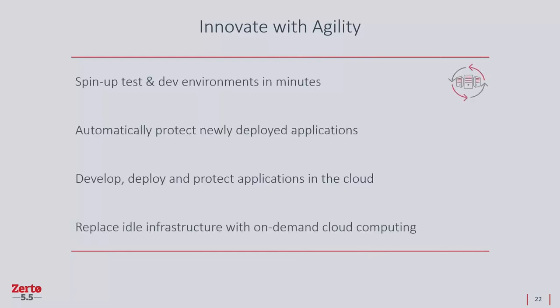We provide innovation with agility. 46 percent of organizations do not have the right tools in place to conduct QA and testing. We give developers the gift of agility — allowing you to spin up test and dev environments in minutes, use the cloud instead of costly data centers, and use your DR site for test and dev as well. You get the flexibility and agility to deploy newer applications, automatically protect them when they go live, and achieve seamless mobility and recoverability between on-premises and cloud infrastructures — enabling you to quickly go to market.